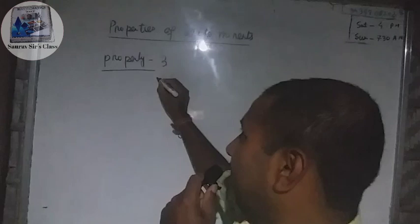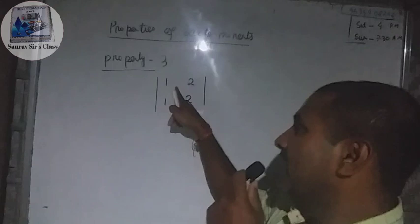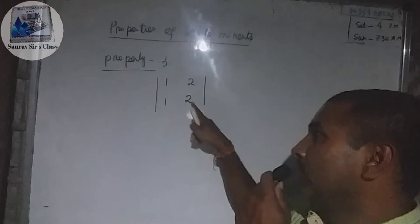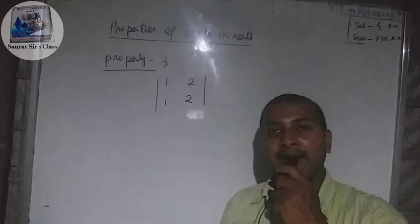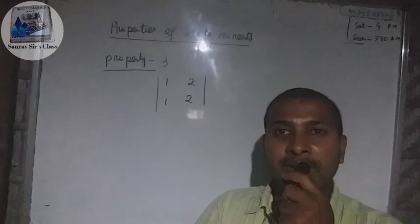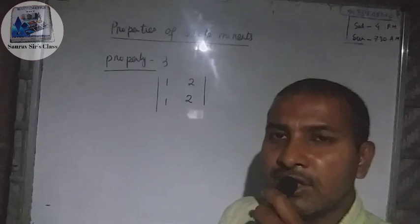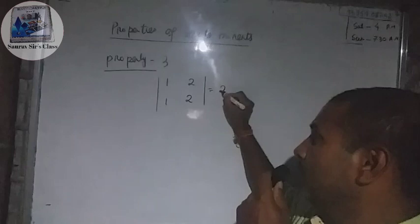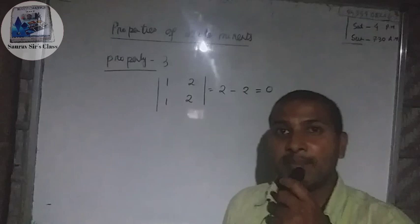For example, take the determinant [1, 2; 1, 2]. The first row is [1, 2] and the second row is also [1, 2], so the two rows are identical. Cross-multiplying: 1 into 2 minus 1 into 2 = 2 minus 2 = 0. So the value of the determinant is zero, confirming the third property.